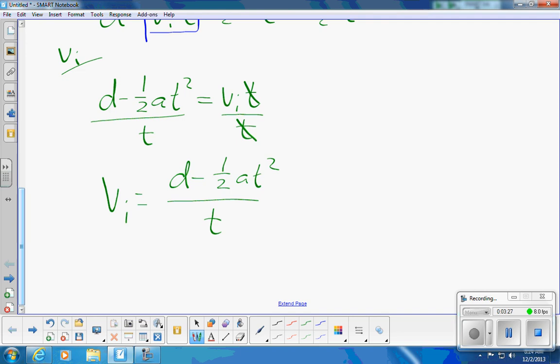And I'm just going to leave it in that form. If you really want to, you can separate that into two terms, which is d over t minus one half a t, if you really want to, but you don't have to. You can just plug numbers into that first version.